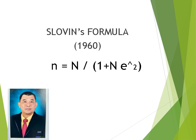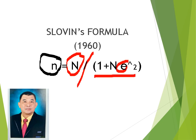So Slovin's formula: the sample size is designated as small letter n, while the total population is designated as capital letter N. This is all over this equation. And E represents the margin of error or tolerance error raised to the second power.